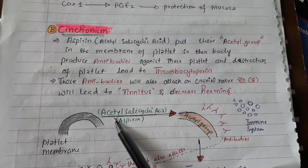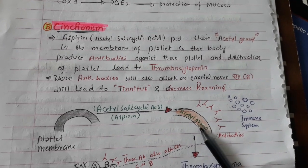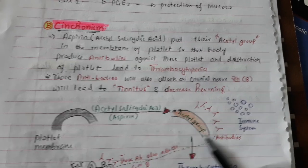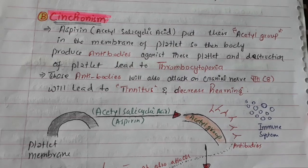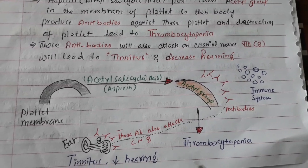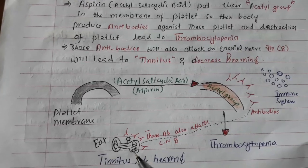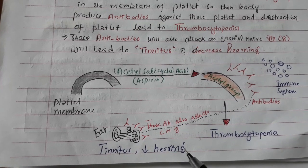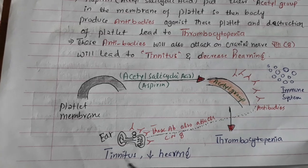Regarding synchronism: aspirin has an acetyl group and will place that acetyl group into the platelet membrane. The body then produces antibodies against these platelets which have the acetyl group. These antibodies will attack the platelets, leading to thrombocytopenia, and will also attack the eighth cranial nerve.